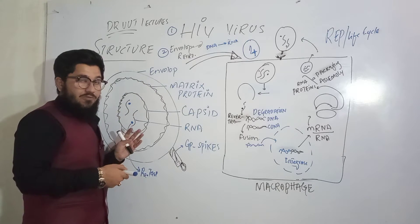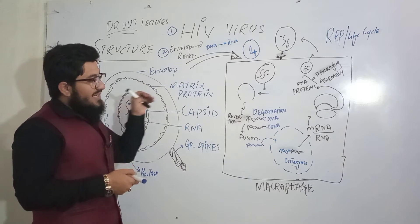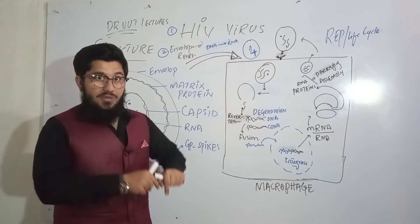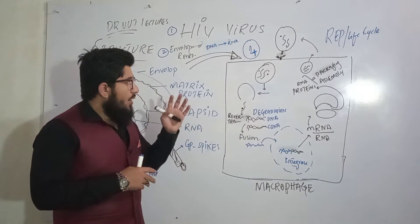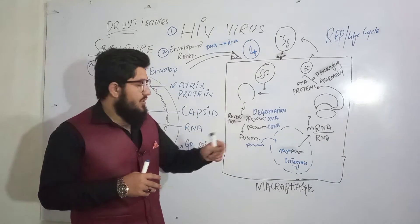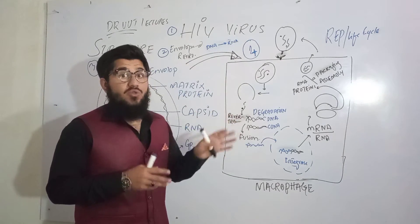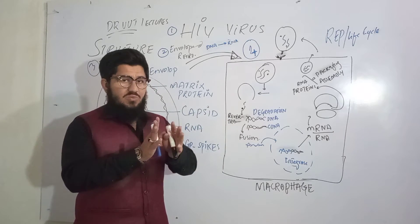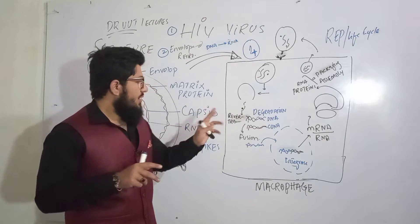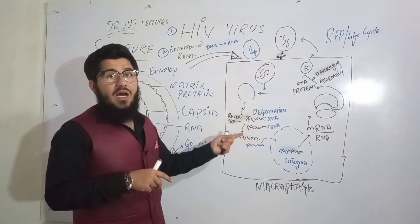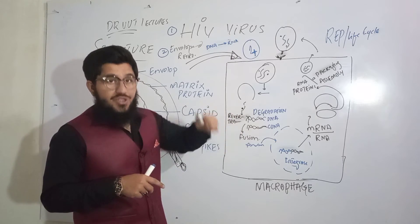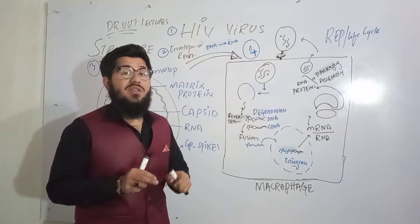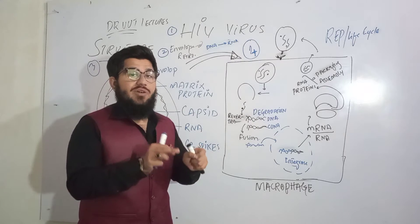When this virus moves inside the cell of a human being — more specifically, when it enters the immune cells of the human body — what is seen is the conversion of RNA into DNA. This conversion is done by the enzyme named reverse transcriptase.